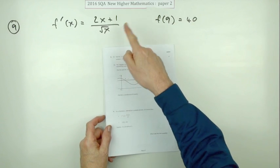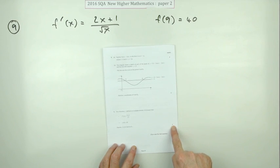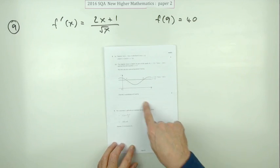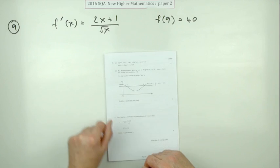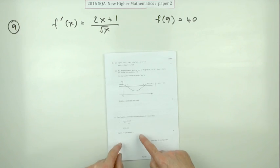Number nine for paper two of the 2016 higher maths. This is quite a simple question here. You recognize it straight away - you're given the derivative and you have to go back to the original one, so in other words you're going to be integrating here.